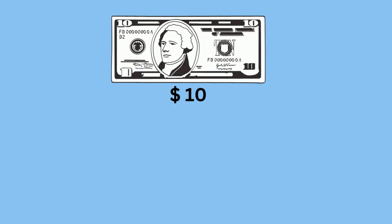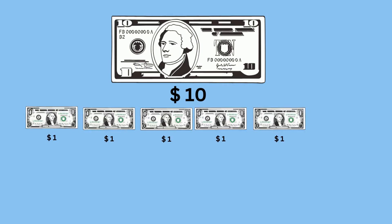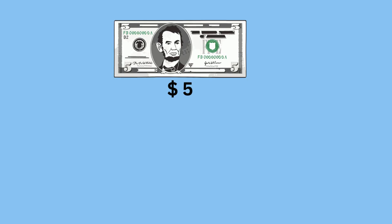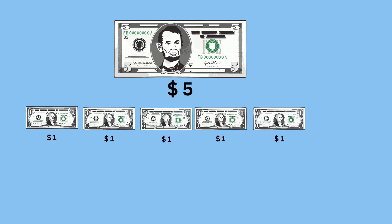A ten dollar bill is made up of ten one-dollar bills: 1, 2, 3, 4, 5, 6, 7, 8, 9, 10. A five dollar bill is — yes, you guessed it — made up of five one-dollar bills: 1, 2, 3, 4, 5.